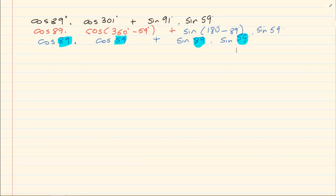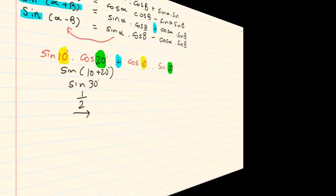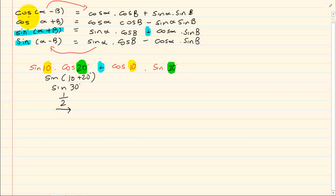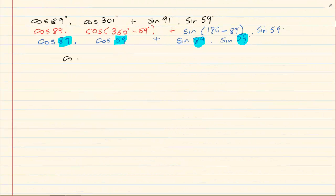We have cos cos plus sin sin. So cos cos plus sin sin is cos(alpha − beta).